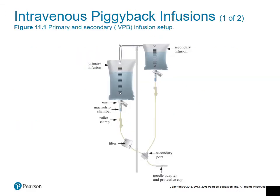This image here is of an intravenous piggyback infusion. The intravenous piggyback allows you to administer medication through a port in an existing IV line. Notice the secondary bag toward the top — it's higher than the primary infusion IV bag. That allows for more pressure on that bag, and therefore the medication in the bag would infuse first.